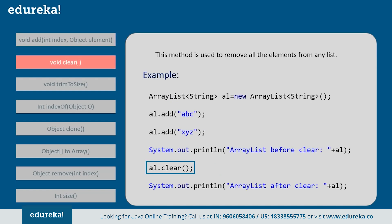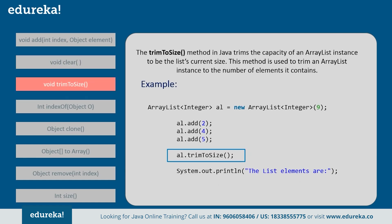Next is the clear method. This method is used to remove all elements from the list — you can simply use the clear method to remove all elements present in the list. Next is trimToSize. This method trims the capacity of an ArrayList instance to the list's current size. For example, if you create an ArrayList of size 9 and add only three elements, calling trimToSize will trim the ArrayList from size 9 to 3 — reducing it to the number of elements it actually contains.